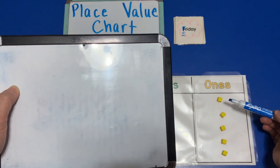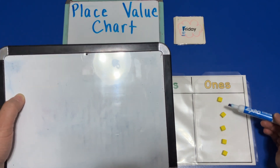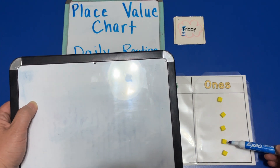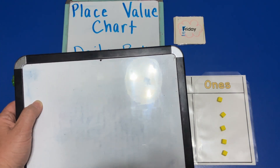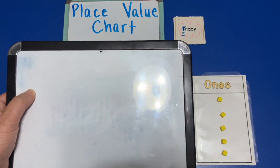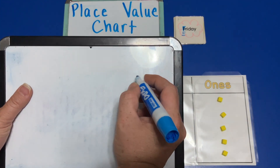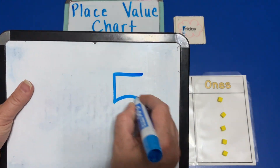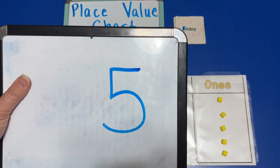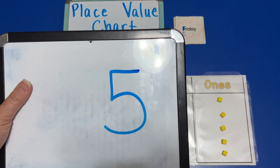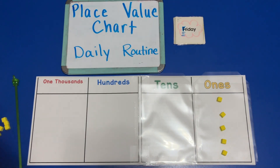Well we only have ones, so we have one, two, three, four, five. On Friday our place value chart has five. And then we're done for Friday.